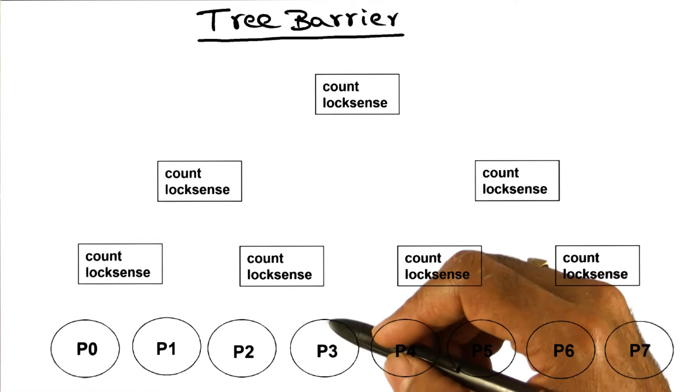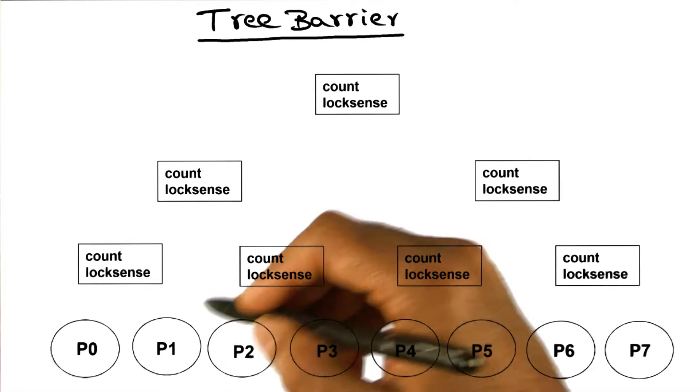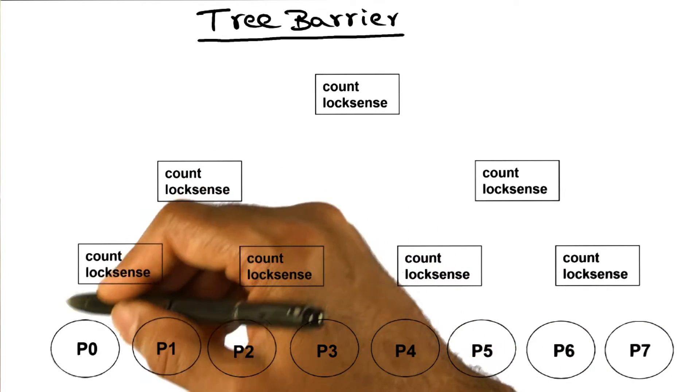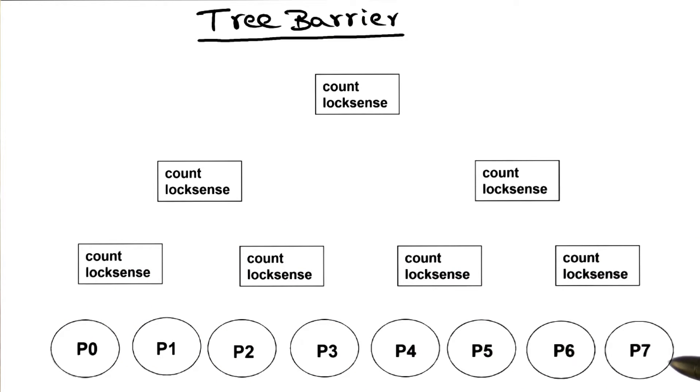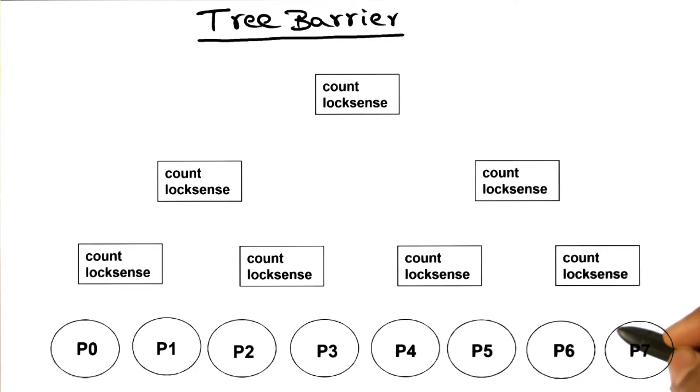Let's say a small number k of processes, and in this example k is equal to two. So essentially, what we are saying is if you have n processes that want to do a barrier synchronization, break them up into small groups of k processes.